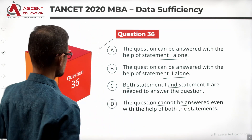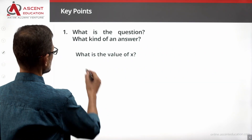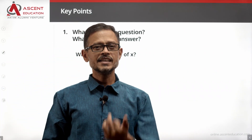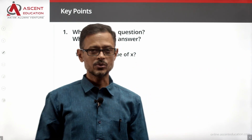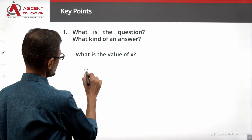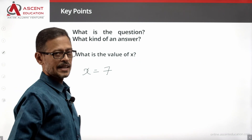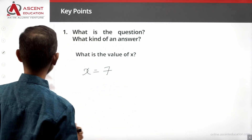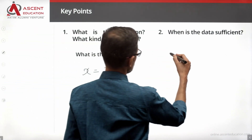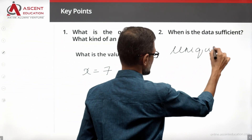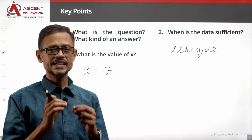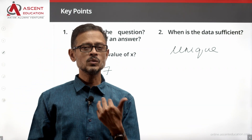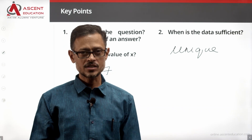Let's get started with the statements. In a data sufficiency question, what is the value of x? The answer is going to be a number. The data is sufficient when we have a unique value — one single value answer. If more than one value is possible, then the data is not sufficient.